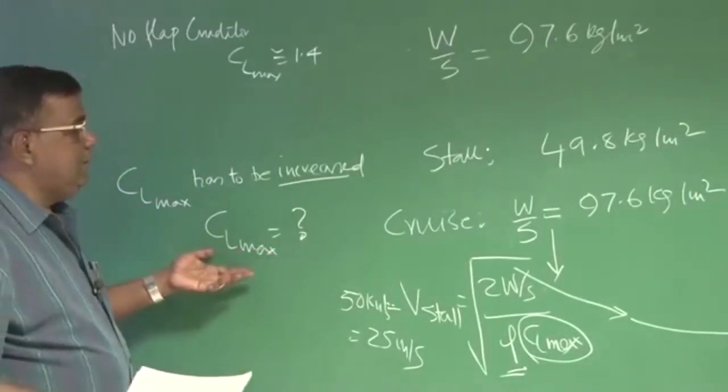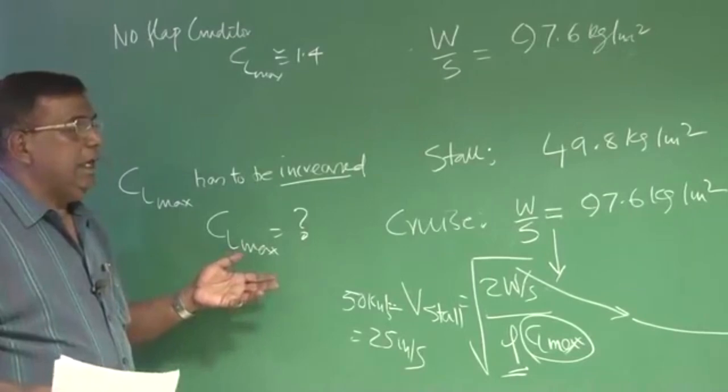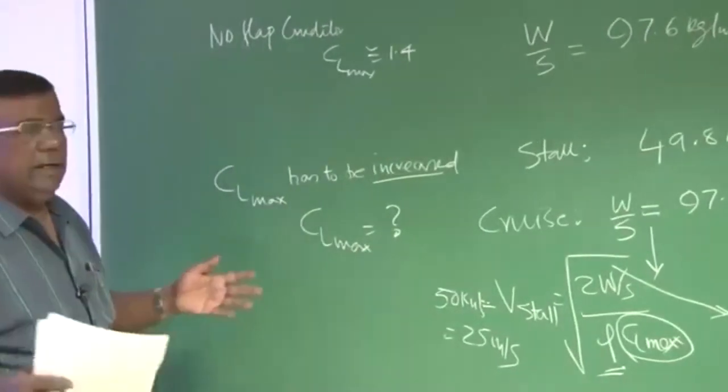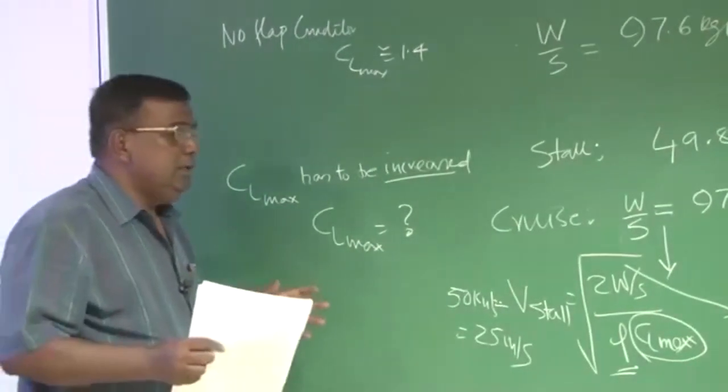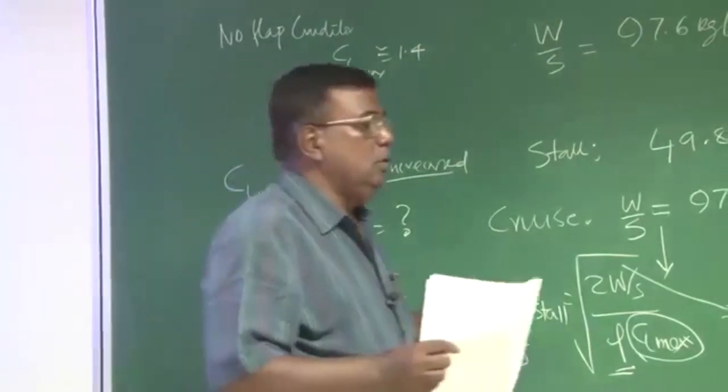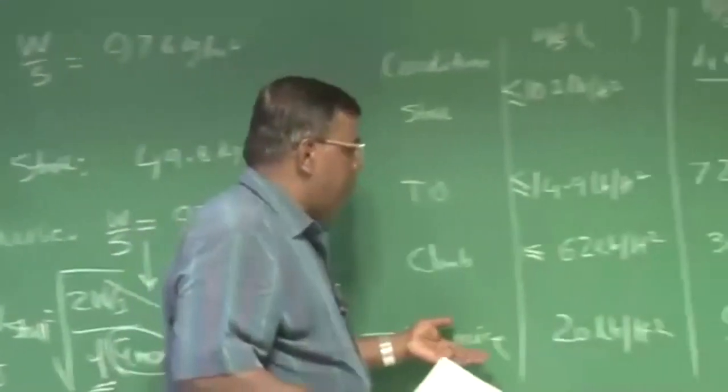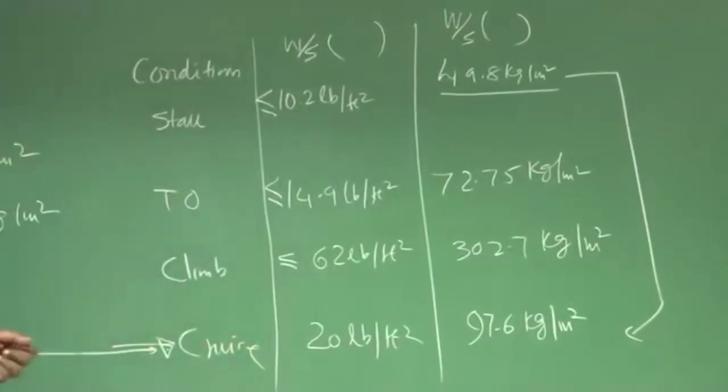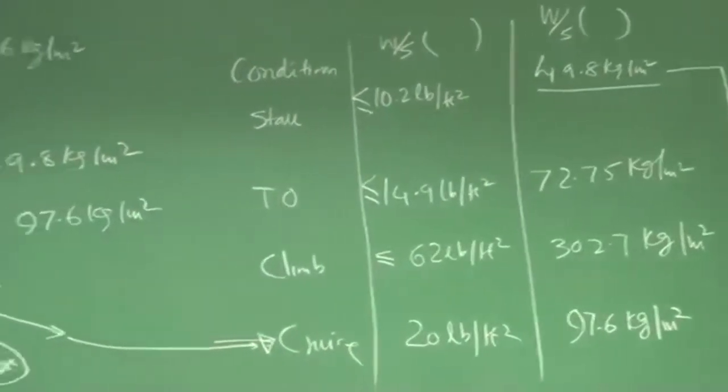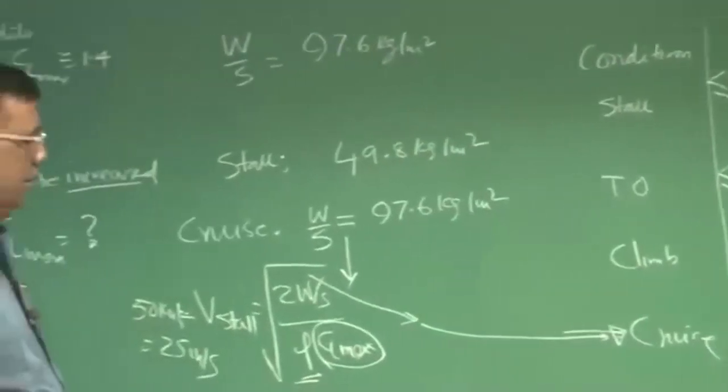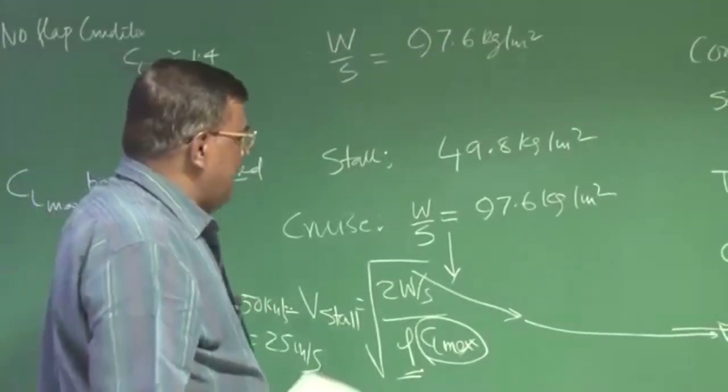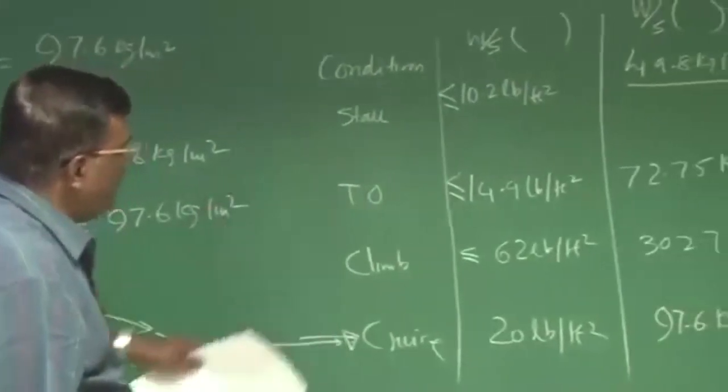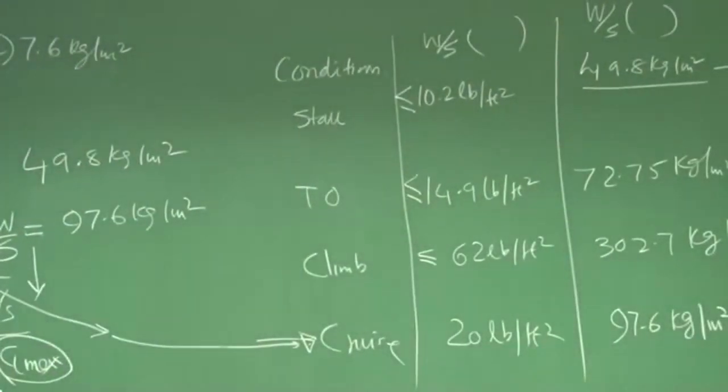And if it is making life miserable in terms of which is affecting every other parameter, then you have to take a look whether I can play around with this or not. We will solve an example. This is just to show you what sort of issues are coming. So if I could immediately see a conflict maintaining stall condition and cruise condition.